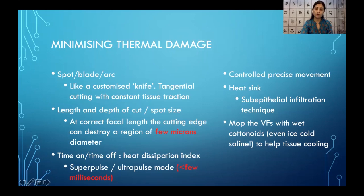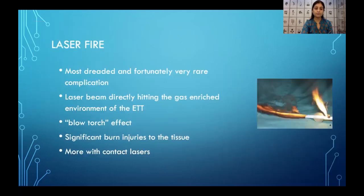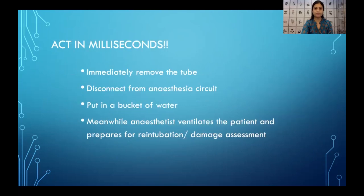There are machine-based parameters and surgeon parameters to keep in mind to minimize thermal damage. Here you see a growth over the right vocal fold being operated upon — using a spot laser in continuous mode, so some charring is happening. The suction can be used to give traction to tissue and allow better visualization of cuts, which is an advantage of laser over the knife. Minimal instruments within the larynx means minimal tissue manipulation and minimal bleeding. Laser fire is one of the most feared but fortunately very rare complications. It happens when the laser beam directly hits the gas-enriched endotracheal tube, spreading like a blowtorch along the ETT into the patient's airway. One must act within milliseconds, immediately remove the tube, disconnect it from the anesthesia circuit, and place it in a bucket of water kept handy in the OT.